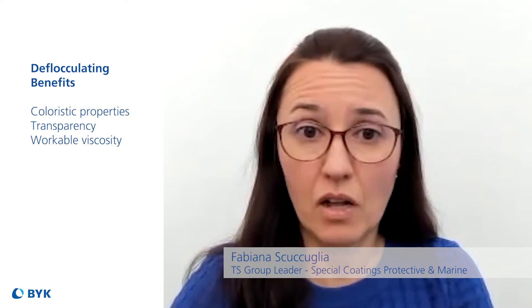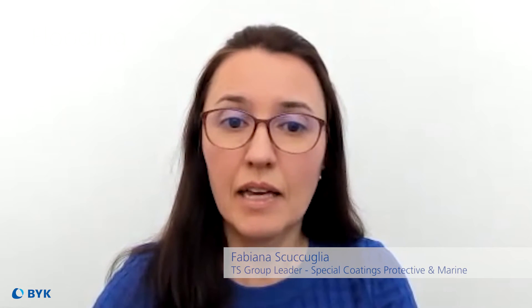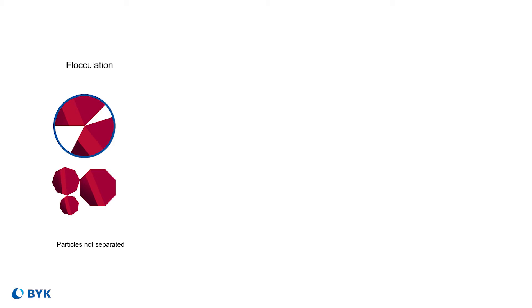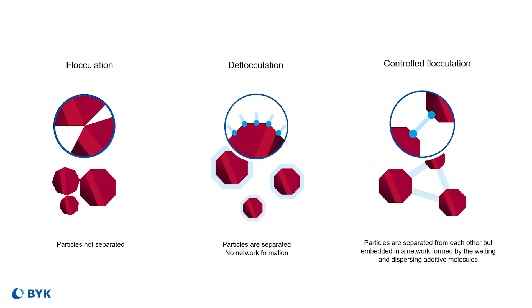We have an alternate product technology that follows a different mechanism — controlled flocculation. This sounds counterintuitive. We want to break pigments down into primary particles, but some challenging systems, especially those with heavier pigments, can benefit from this alternate technology. Flocculation is when pigment particles are grouped together in agglomerates and have direct contact with each other. Deflocculation is when the particles are fully separated into primary pigment particles. Controlled flocculation sits in between these two concepts.